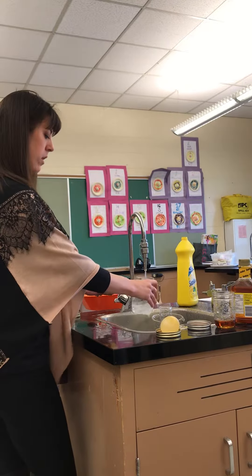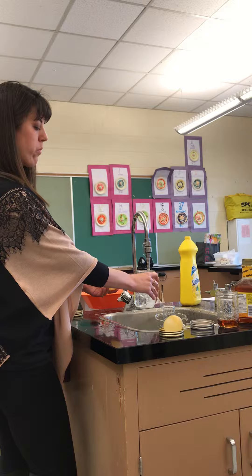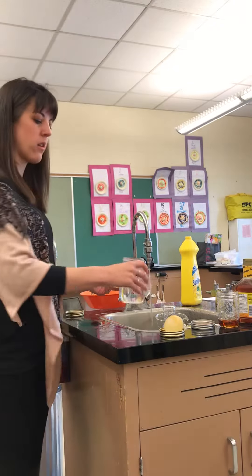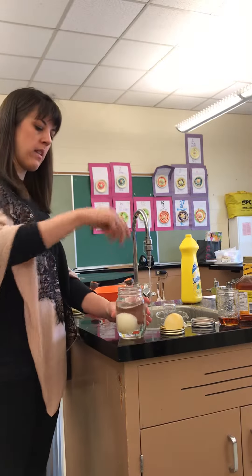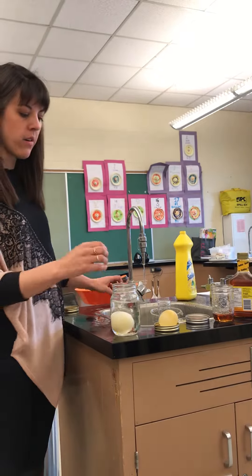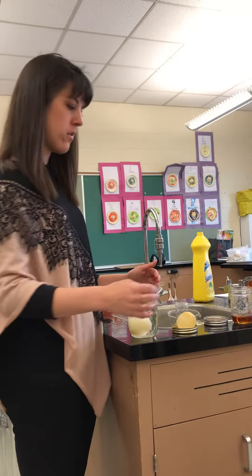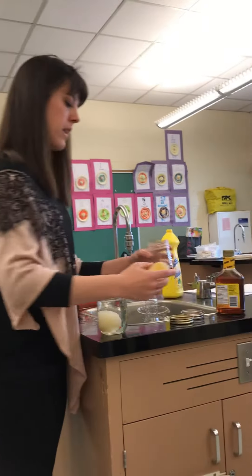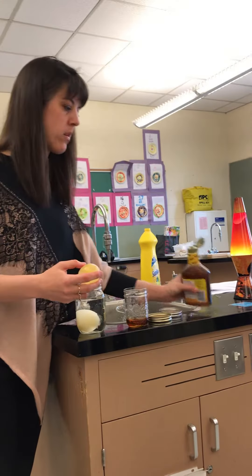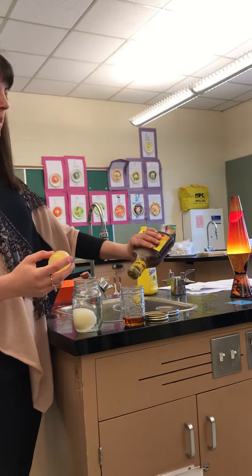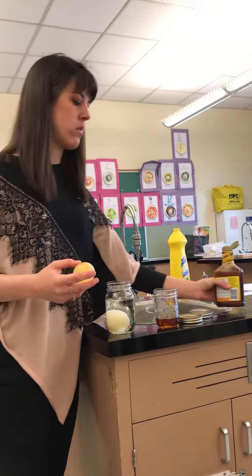We're going to fill one beaker with water as our controlled variable, and leave the egg in there to see whether it stays the same size or changes. And in this one, we're going to put a lot of corn syrup, because it has a high concentration of solutes.